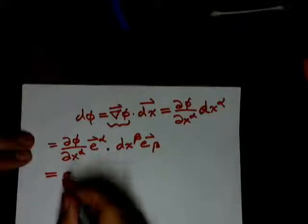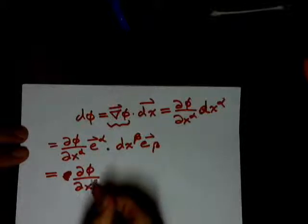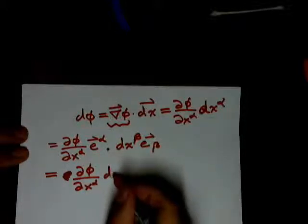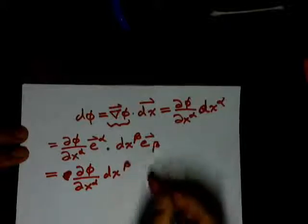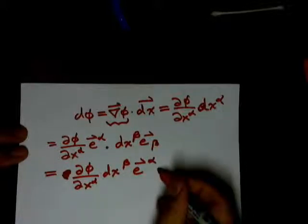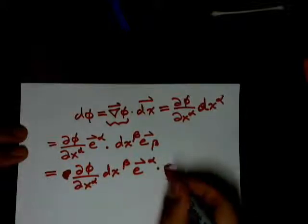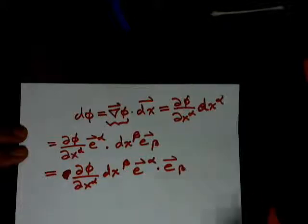So we get the partial of φ with respect to x^α, we're going to pull this out in front, dx^β, and we're going to dot this contravariant basis vector into this covariant basis vector.